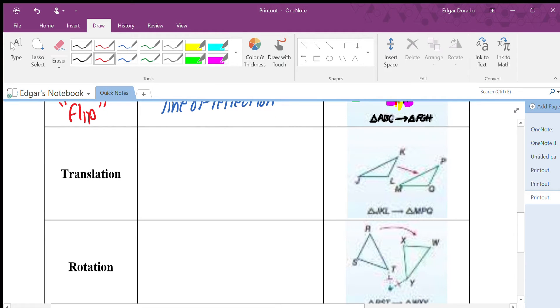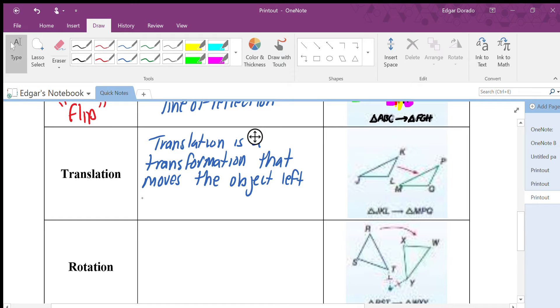Let's go ahead and take a look at translations. So a translation is a transformation that moves the object left, right, up, or down. So it can move it in any of those directions. So really, a translation, all it really is is a slide.